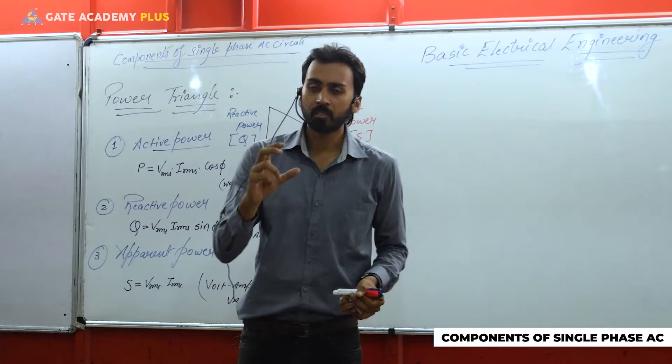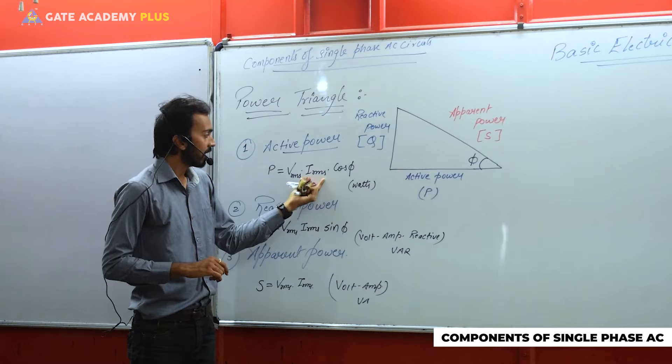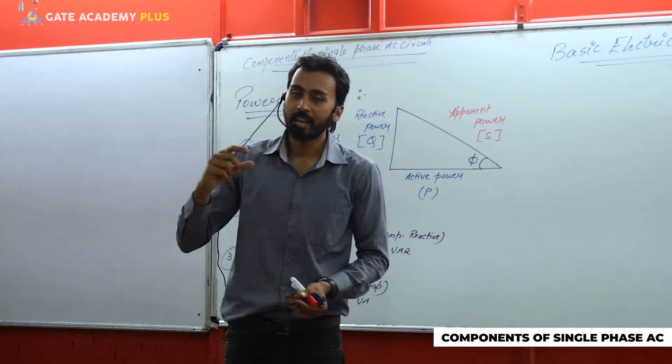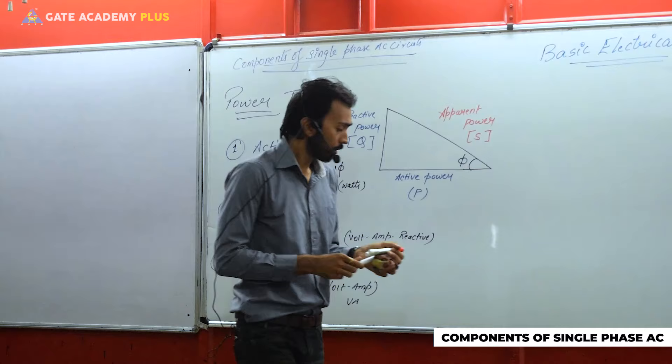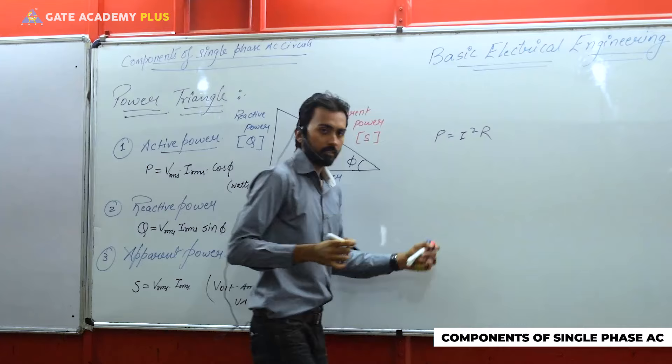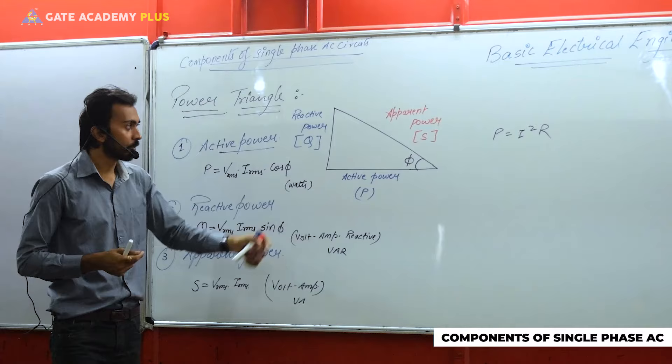Active power is the only true power present in the circuit. For numerical problems, by default when you calculate power dissipated, that is always the true (active) power. Active power is P = V_rms · I_rms · cos φ, where cos φ is also known as power factor. The formula P = I²R used in DC networks is actually derived from this same formula.